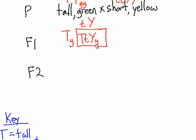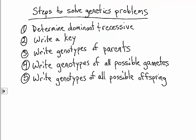Now if we take two of these F1 offspring and cross these double heterozygotes together, we can determine what we'll get for the F2 offspring. Again, take a look at our steps to solve a genetics problem. We've already determined dominant and recessive. We've written a key. We have the genotypes of our new parents, the F1 parents. And we now need to write the genotypes of all the possible gametes.